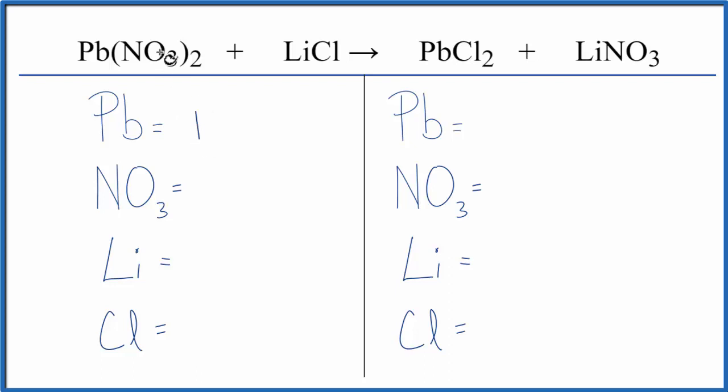Let's add the atoms up on each side. We have 1 lead, and then this NO₃, it appears here and stays together in the chemical reaction. It's here again. So I'm just going to count it as 1 item. So I have 1 NO₃ times 2. That gives me 2 nitrate ions, 1 lithium, and 1 chlorine.